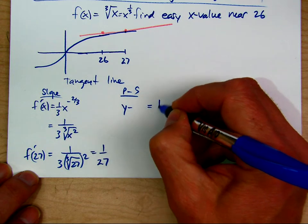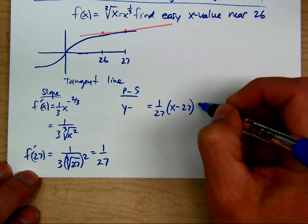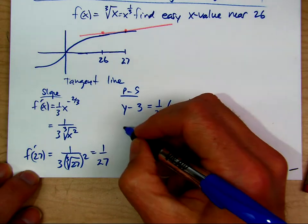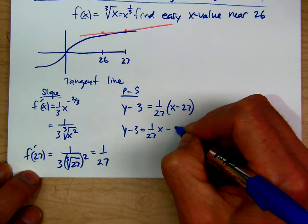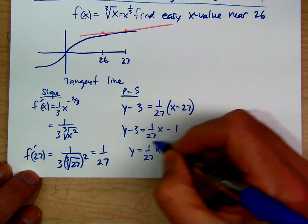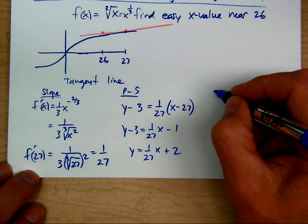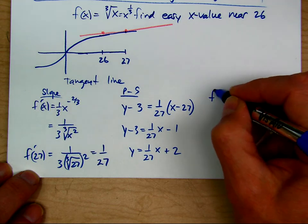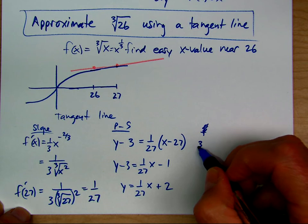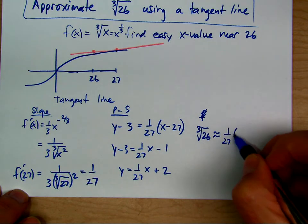Now we do the point-slope formula. We have x minus the x value. We know that the y value, the cube root of 27, is 3. Distributing the 1 over 27 and adding 3, we get the tangent line equation. Then we say that the cubed root of 26 is approximately 1 over 27 times 26 plus 2.